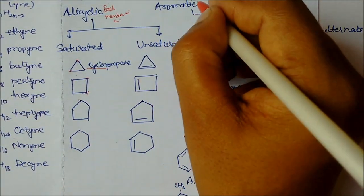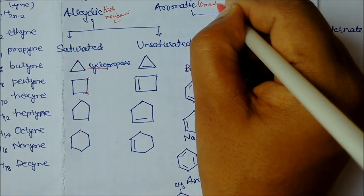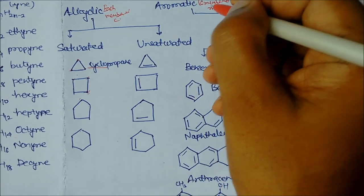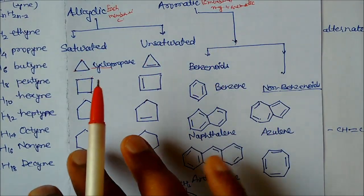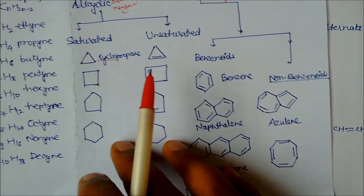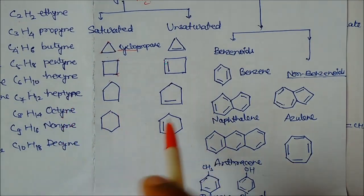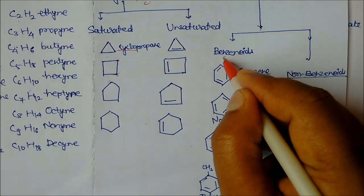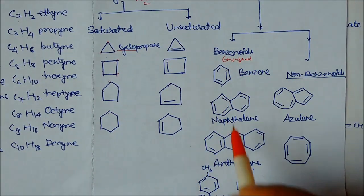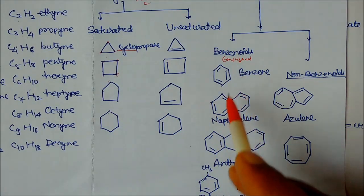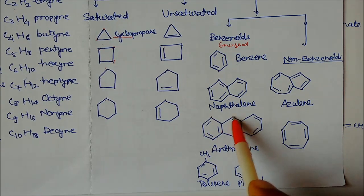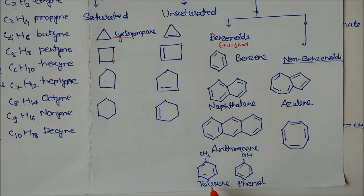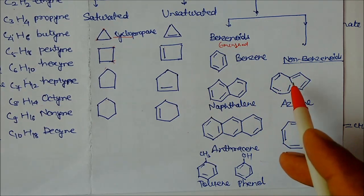Similarly, aromatic compounds are six-membered rings with an aromatic smell. We will define aromaticity in detail later. If the ring members are only six-membered, they are called benzenoids. Examples of benzenoids include naphthalene, anthracene, toluene, and phenol — all having six-membered rings with alternating single and double bonds.